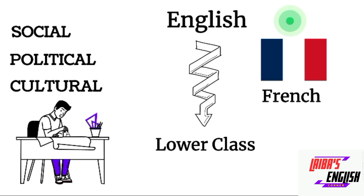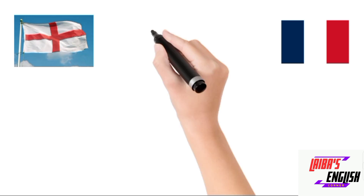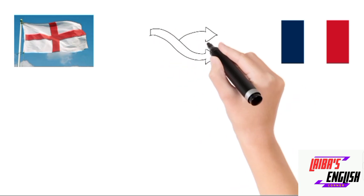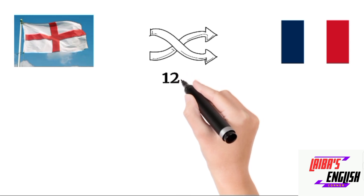English was now considered a vulgar language — the language of the lower class. People hated to speak English; those who spoke it were seen as belonging to the lower class. Around 1200 AD, England and France separated and split up.